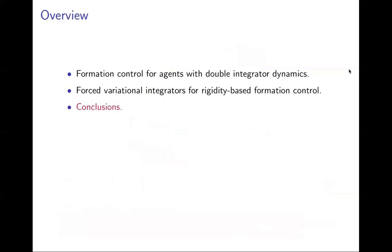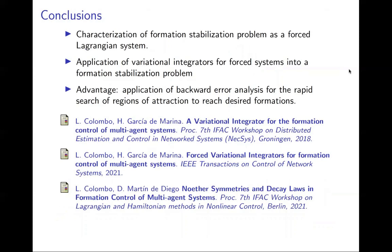Concluding, we have characterized the formation stabilization problem as a forced Lagrangian system and we employ forced variational integrators into the formation stabilization problem. As an advantage of this, we show an application of backward error analysis for the rapid search of regions of attraction to the desired shapes. Thank you very much for your attention and I'm happy to answer any questions.